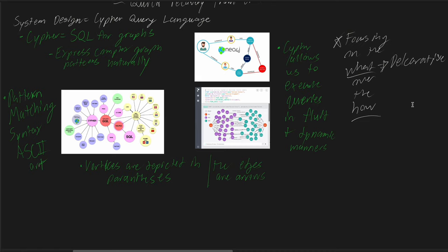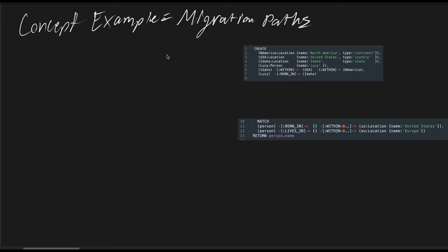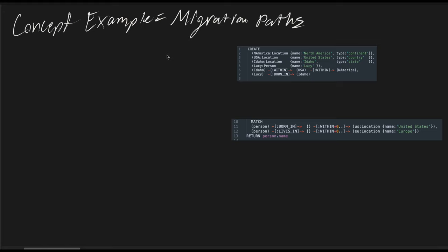Now let's head over to our concept example with some Cypher query language. To solidify our understanding, let's go over a concept example, migration path. Let's visualize a query using Cypher that identifies people who have migrated from the United States to Europe. In our graph, each person is a vertex.